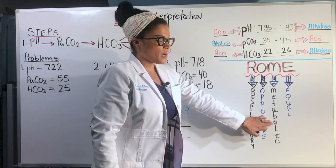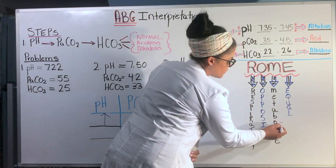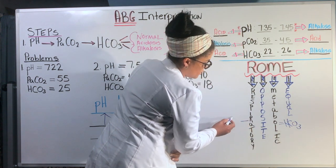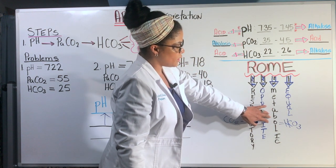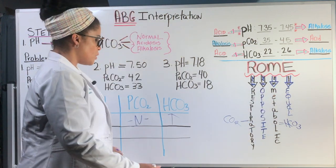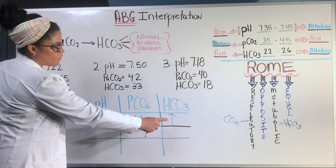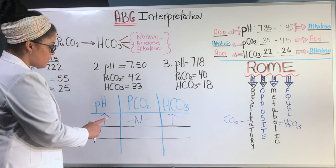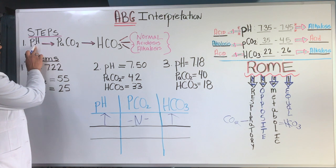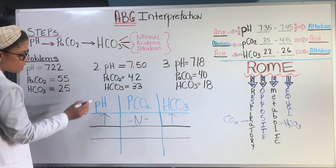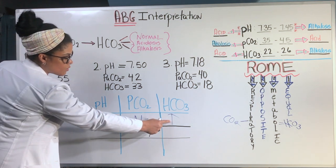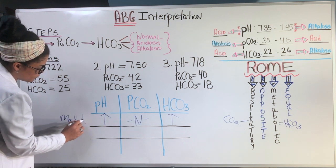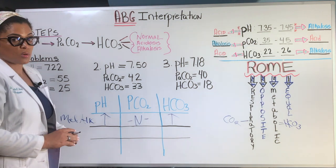In ROME, metabolic, which is the symbol for the bicarb, and this is CO2, metabolic is equal. So both the pH and the bicarb are going to be moving in the same direction. So this is alkalosis because the first step is to determine where the pH is. So it's alkalosis. So it's metabolic alkalosis. And the CO2 is normal.